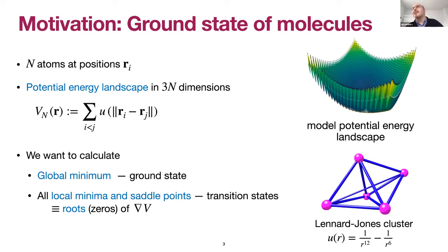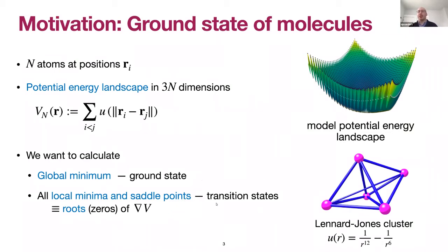The problem is that model landscapes you want to optimize look something like this — a neural network, for example, has all these local minima, saddle points, and so on. Any local optimizer will get trapped in one of these local minima, so we really want global optimization. In particular, we want to calculate not only the ground state but all local minima and saddle points, which represent transition states between different minima. That corresponds to finding all roots of the gradient of the potential function — those are the two basic problems I want to study.